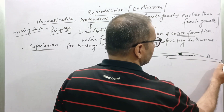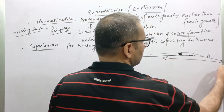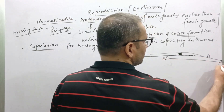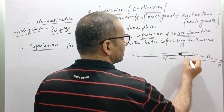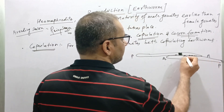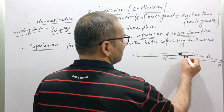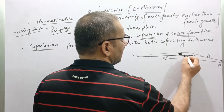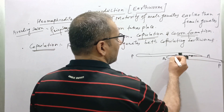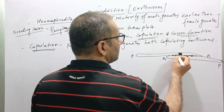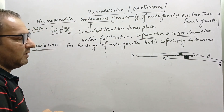Now another earthworm — this is its anterior end, this is its posterior end, here is its clitellum, here is its male genital pore, and here are the spermathecal pores of the other earthworm.